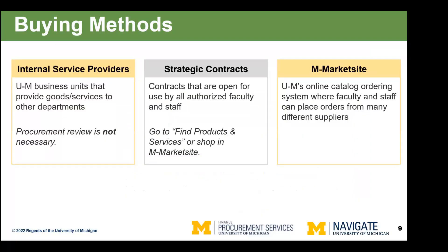Our first buying method would be to utilize internal service providers — U of M business units that provide goods or services to other units. Procurement does not need to be involved, there does not need to be a competitive bid, and you can use your short code. There are a range of goods and services available: everything from catering to moving to scientific services, DNA sequencing, microscopy. The university even has a custom glass blowing shop for your custom lab glassware needs.